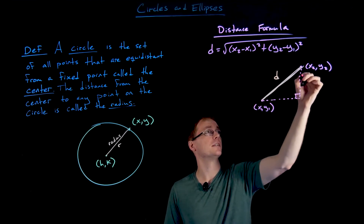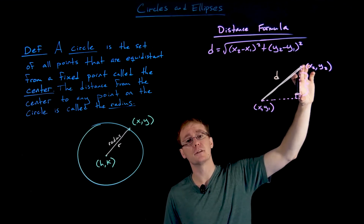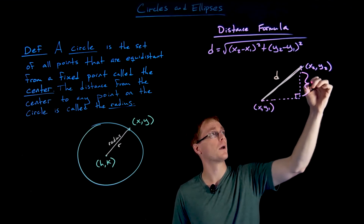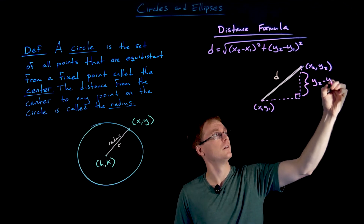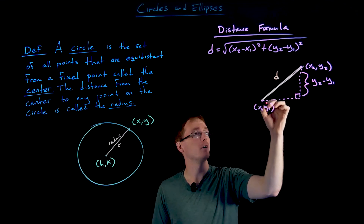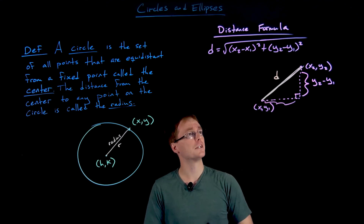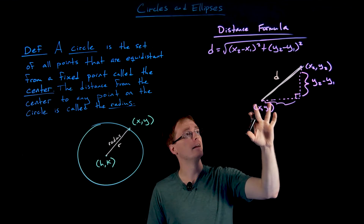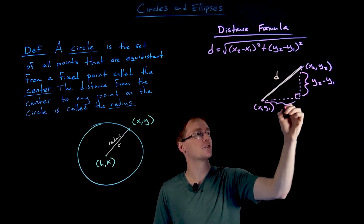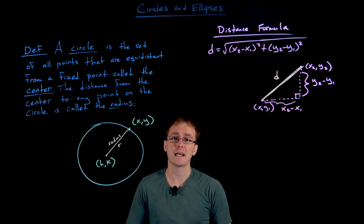The distance formula is derived using right triangles and the Pythagorean theorem: a² + b² = c², but now instead of calling the hypotenuse c we call it d, the distance between our two points. The height of our right triangle is given by y₂ minus y₁, and similarly the base is the horizontal difference x₂ minus x₁.